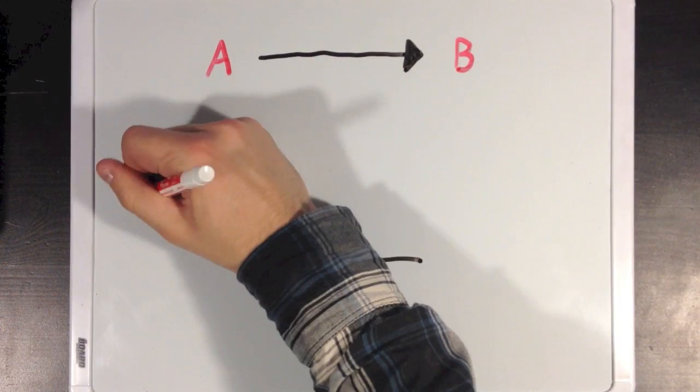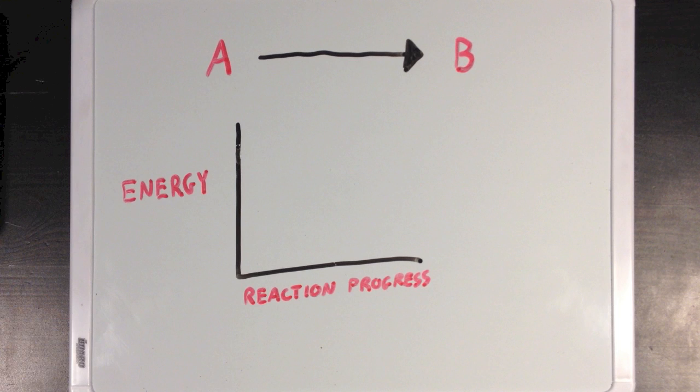So what effect do these catalytic strategies actually have on a reaction? Well, let's look at this sample reaction, where we're having molecule A being converted to molecule B. Now, we can look at the process of this reaction using something called a reaction coordinate diagram.